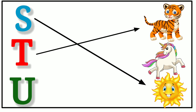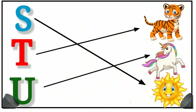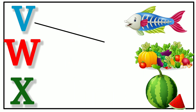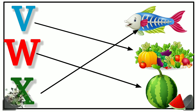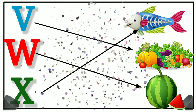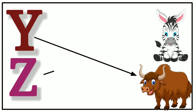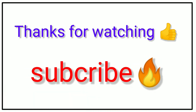T for tiger, U for unicorn, V for vegetables, W for watermelon, X for x-ray fish, Y for yak. Thank you.